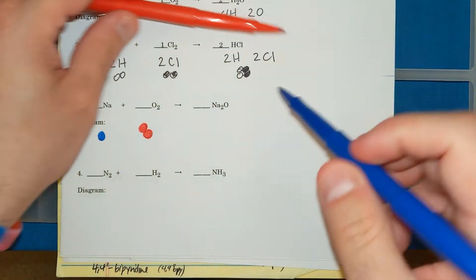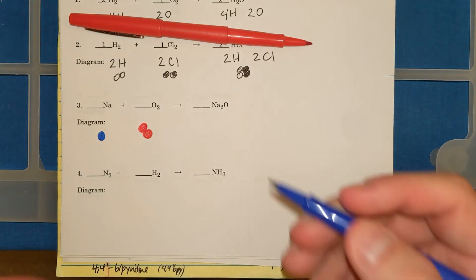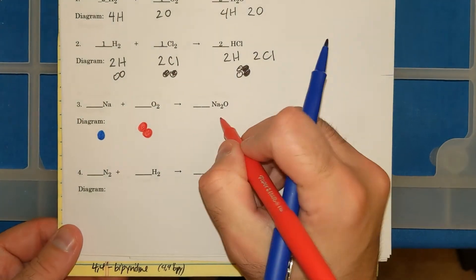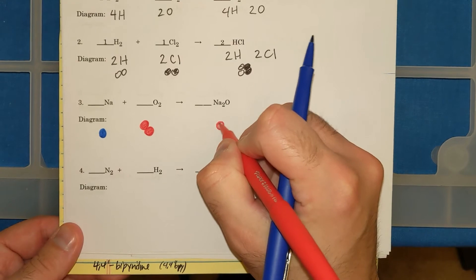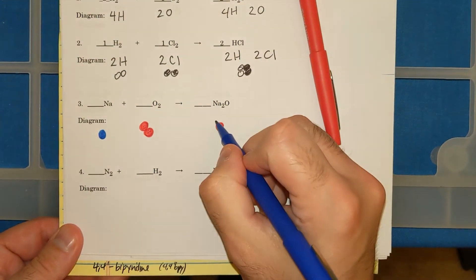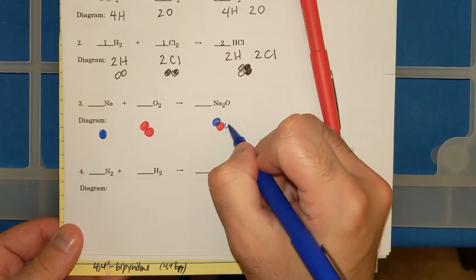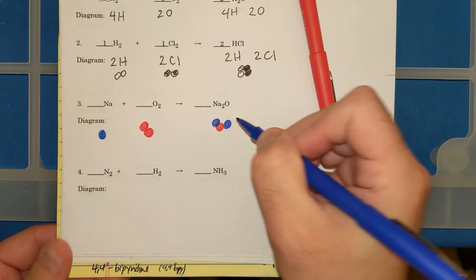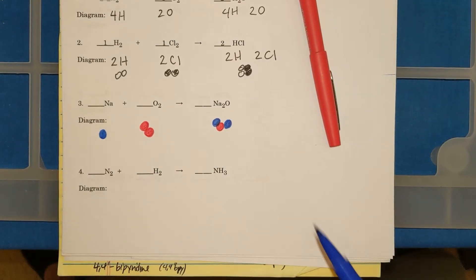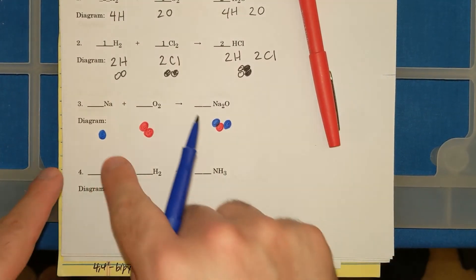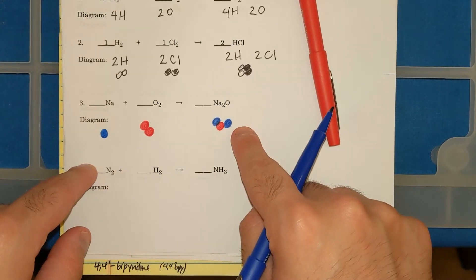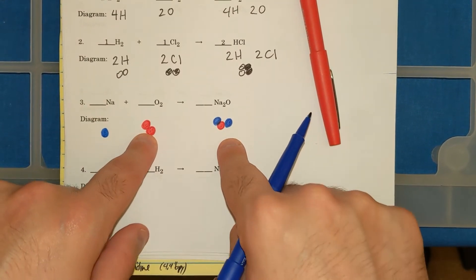And then on the right side, I have Na2O. So that means I have 1 O with 2 Na's. You can already begin to see that if I'm counting, I have 1 Na, 2 Na, 2 O's, 1 O.